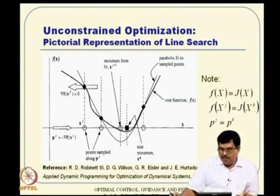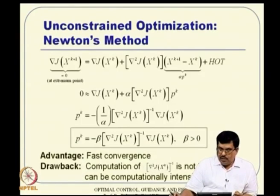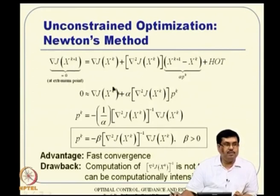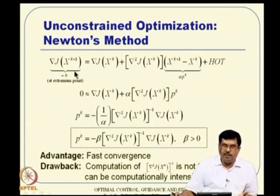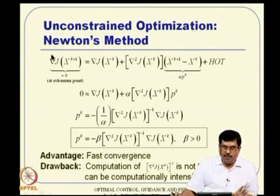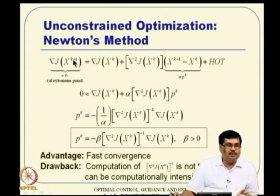Coming to Newton's method: we go a little further. We know from the necessary condition that the gradient of J must equal 0 at the optimum. So rather than expanding the function itself, we expand the gradient of the function using Taylor series — a more intelligent approach. The gradient is a vector function, but vector functions can still be expanded via Taylor series.